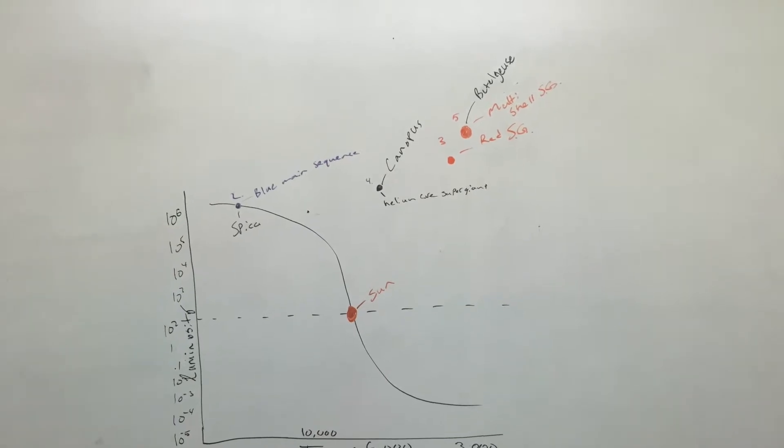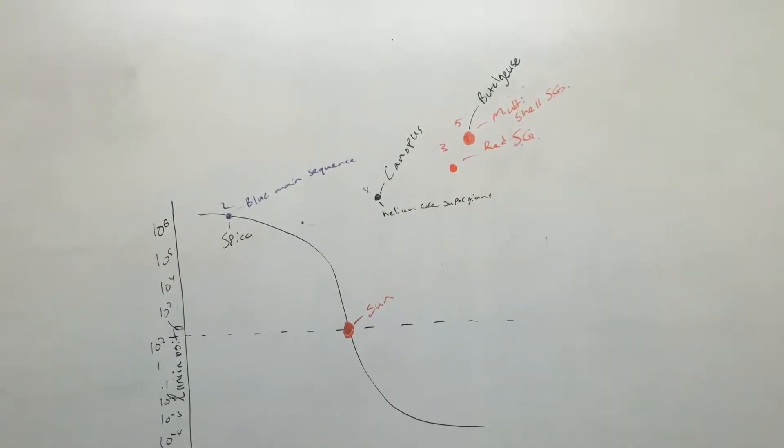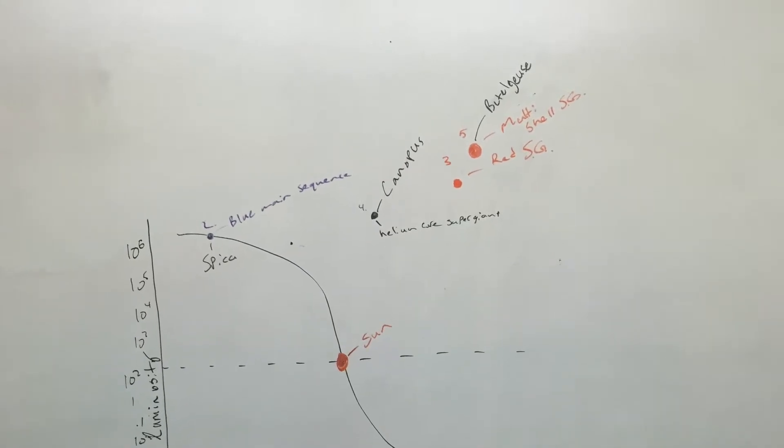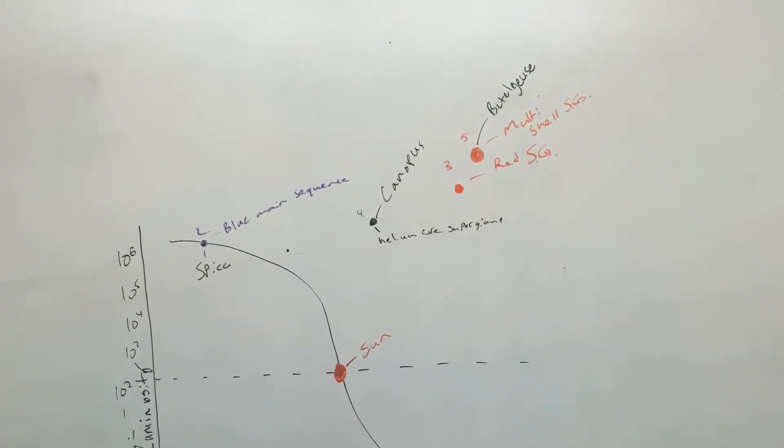After this, a helium core fusion supergiant begins to form. It gets hot enough to fuse all helium into carbon. The core expands and slows the rate of hydrogen fusion, causing the outer layers to shrink.